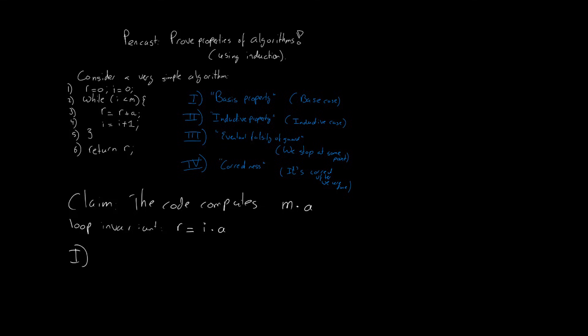Before the loop, i is zero. And as we know, zero times a is zero. And, well, would you look at that, r is also equal to zero. So, our basis property holds. The invariant is true before the loop starts.